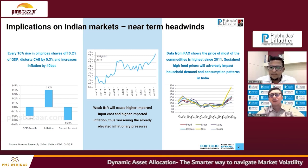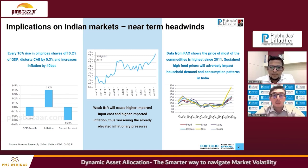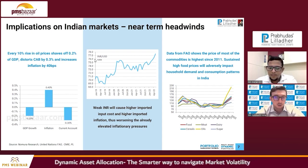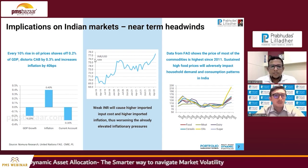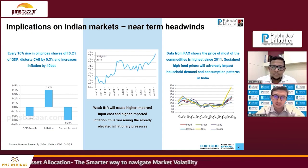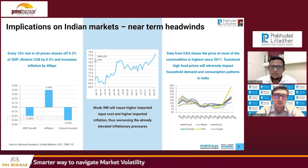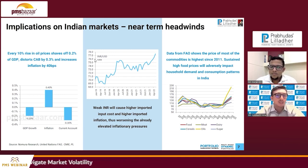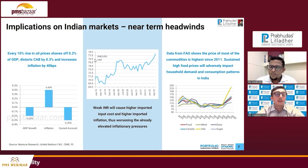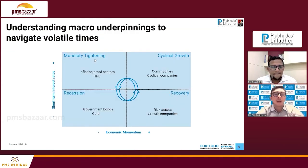Commodity inflation is at historic highs right now with no signs of reversing, partly driven by geopolitical tension in Russia and Ukraine, as well as lockdowns in China. So at this point in time, it is very important to understand how to navigate these cycles and what is the right mix of assets to help us do so.